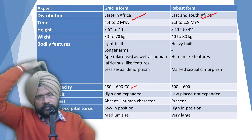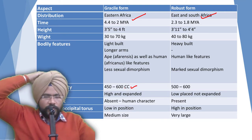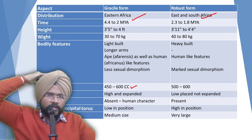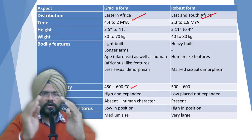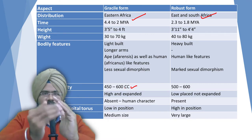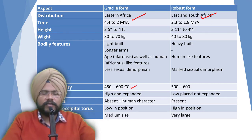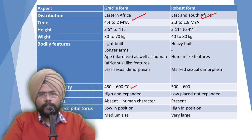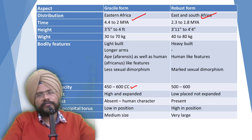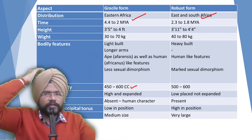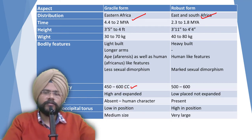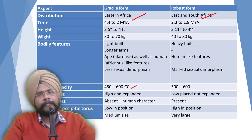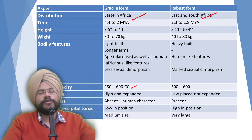The sagittal crest — the ridge running along the top of the skull — is absent in the gracile form (nearly absent). In apes like gorillas, the sagittal crest is present. Why? Because of strong facial muscles that need to be anchored somewhere, just as thigh muscles are fixed with the linea aspera on the back of the femur.